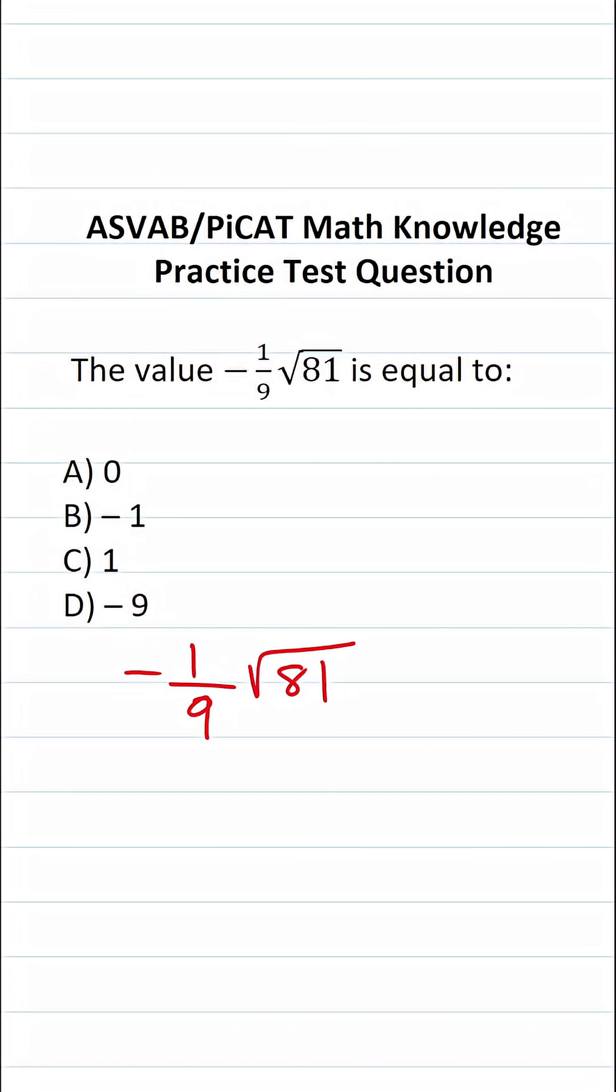For that reason, I'd recommend you get in the habit of copying things down and working them out on your own scratch paper. In this case, we'll solve this by first finding the square root of 81, which you should know is nine.